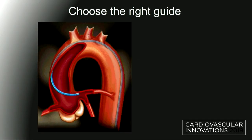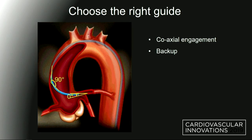So how do you choose the right guide? You have to follow a set of principles that are valid for any guide that you use. You want to get something that allows you for coaxial engagement, and you want to get something that gives you an angle as close to zero as possible between the guide and the coronary.